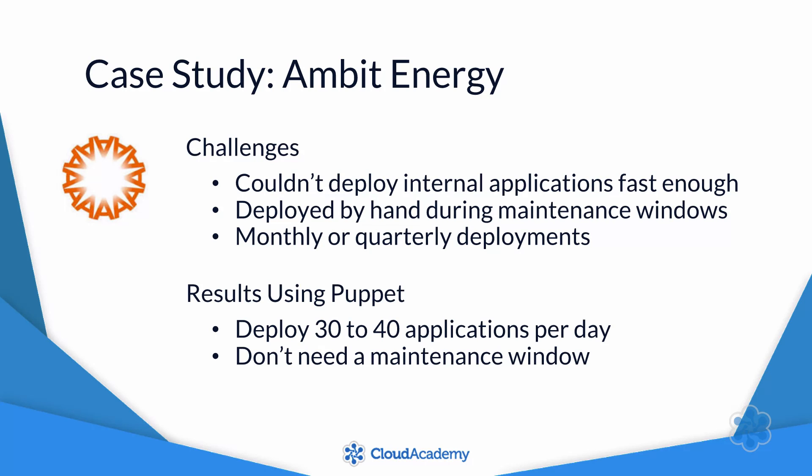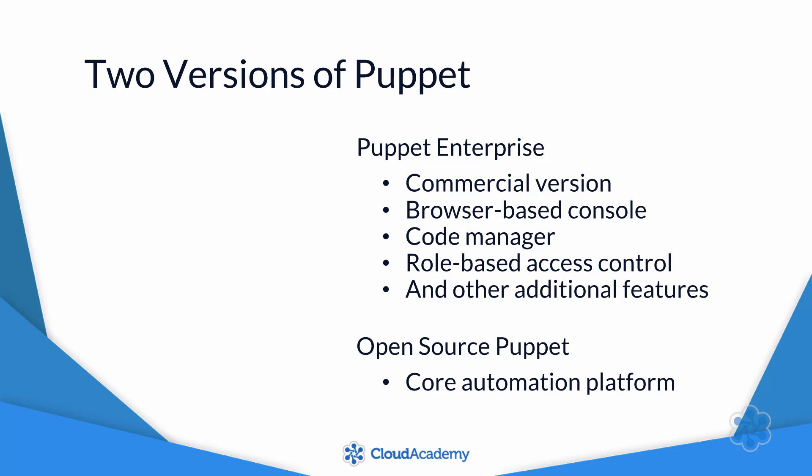I should mention that Ambit Energy uses Puppet Enterprise rather than the open source version of Puppet. Puppet Enterprise is the commercial version, which comes with additional features such as a browser-based console and a code manager. However, you can get the automation benefits from the open source version of Puppet as well, and that's the version we'll be exploring in this course.